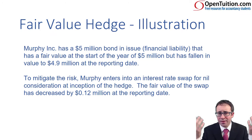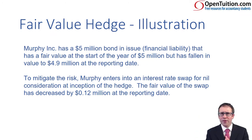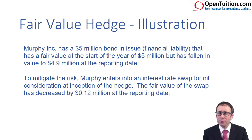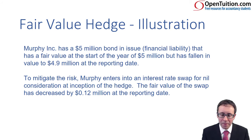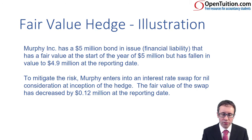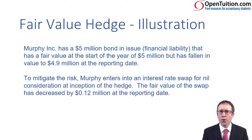So let's pull it together and have a look at an illustration. We've got here Murphy Inc. has a $5 million bond in issue — they have raised finance via debt finance and taken in $5 million. So debit bank $5 million, credit your financial liability at $5 million. It has a fair value at the start of the year of $5 million, but for whatever reason it has fallen to $4.9 million at the reporting date.